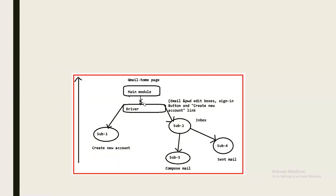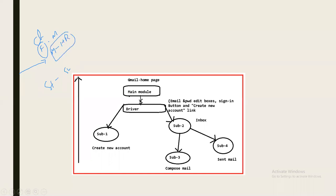A simple analogy: think of a classroom where the faculty is the main module and students are the sub modules. If the faculty is absent, management sends HR to address the students about placements — providing temporary information on the subject. That is what the driver does. In cases where both the main module and sub modules are under construction, we need to use both stub and driver.